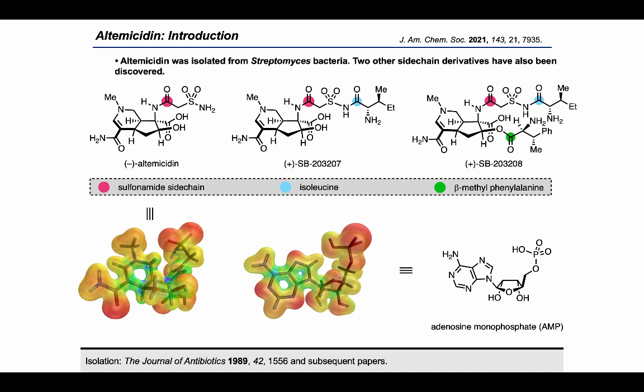While the cytotoxic mechanism of action of altemicidin has not been reported, these findings by SmithKline Beecham interested us and we were intrigued by the possibility that altemicidin itself could serve as an adenosine monophosphate or AMP mimic. Since nucleotide mimics have found success in the pharmaceutical industry as antivirals and immunotherapeutics, we believe the mechanism of action of altemicidin is worth further investigation.